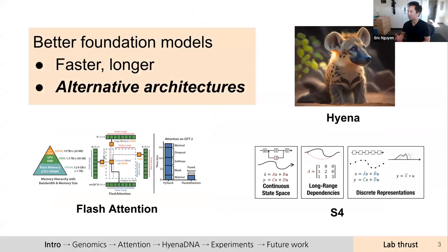One of the things we've been focusing on lately is how to create better foundation models. This has looked like a couple of instantiations. One thrust is on how to create faster, more efficient versions of transformers — this looks like FlashAttention, the world's fastest implementation of the standard attention algorithm, about 5 to 9x faster than PyTorch. I work on what we call alternative architectures — models that can go beyond transformers in efficiency, particularly for long sequences. These include models based on S4 or state-based models, and today we'll be talking about Hyena, a convolutional-based model.